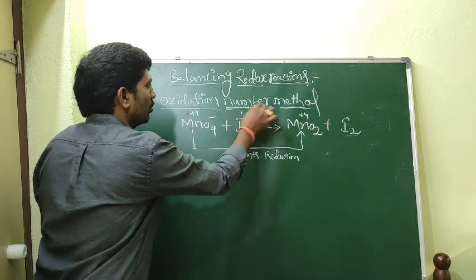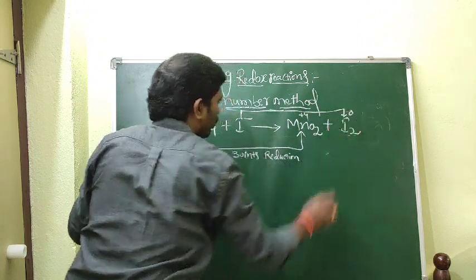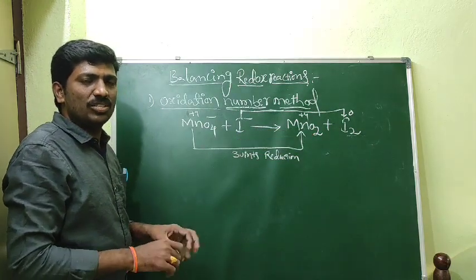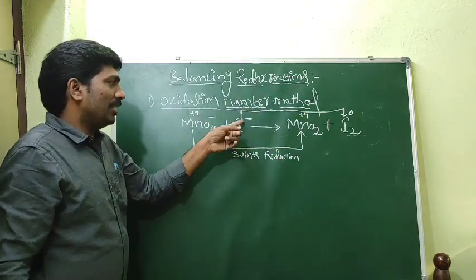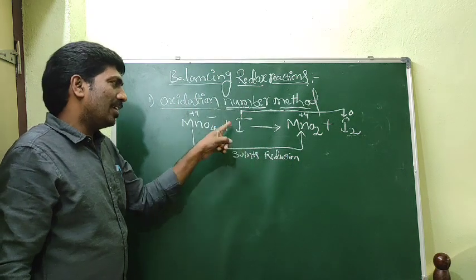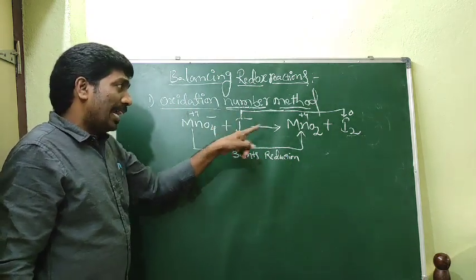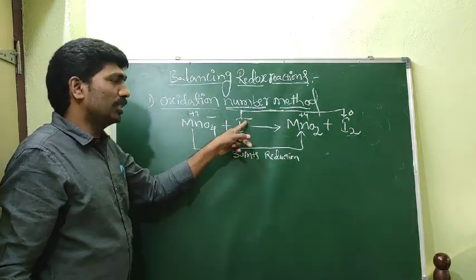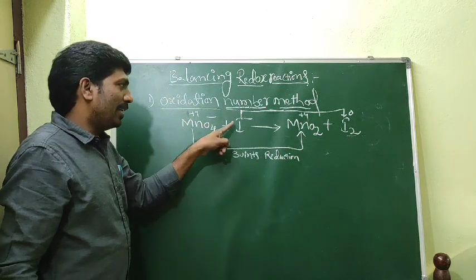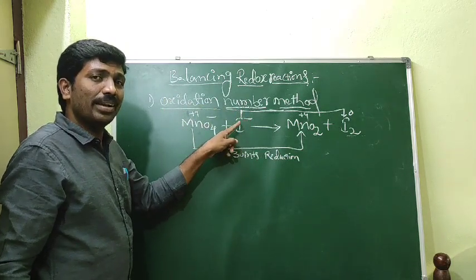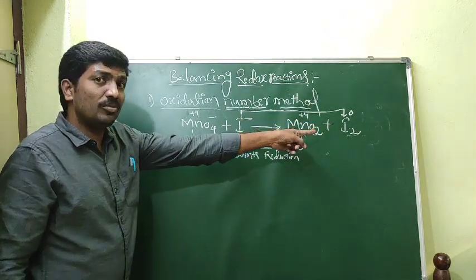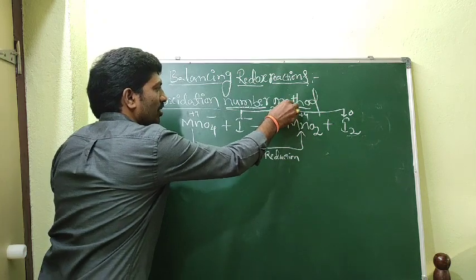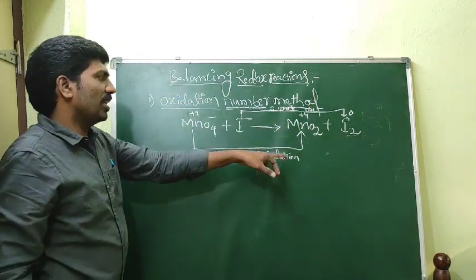Now for iodine: in molecular form I2, N2, O2, Cl2, Br2, H2 — all have 0 oxidation state. So I2 is 0. I⁻ is −1. Going from −1 to 0 means 1 electron is lost per atom. Since there are 2 atoms in I2, 2 × (−1) = −2, and 2 electrons are lost in total — a difference of 2 units. This is oxidation.